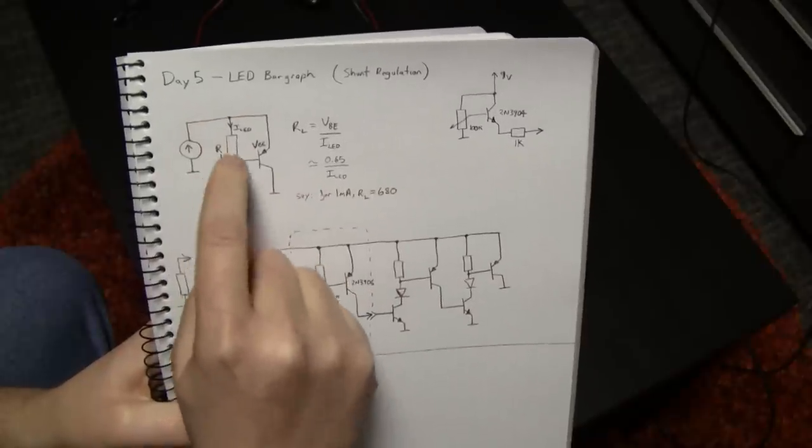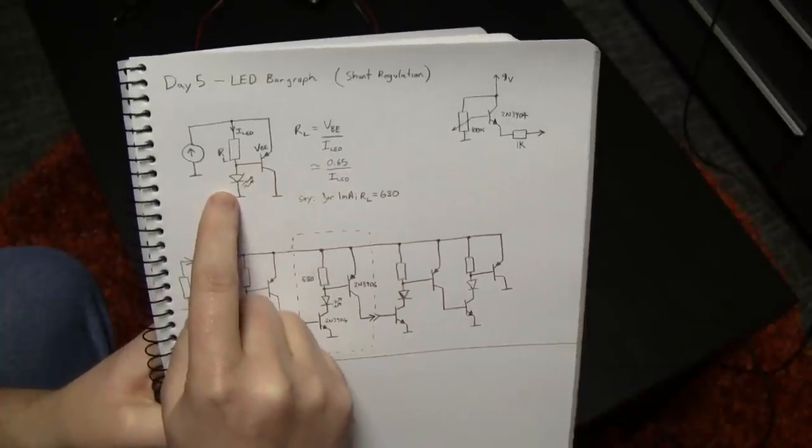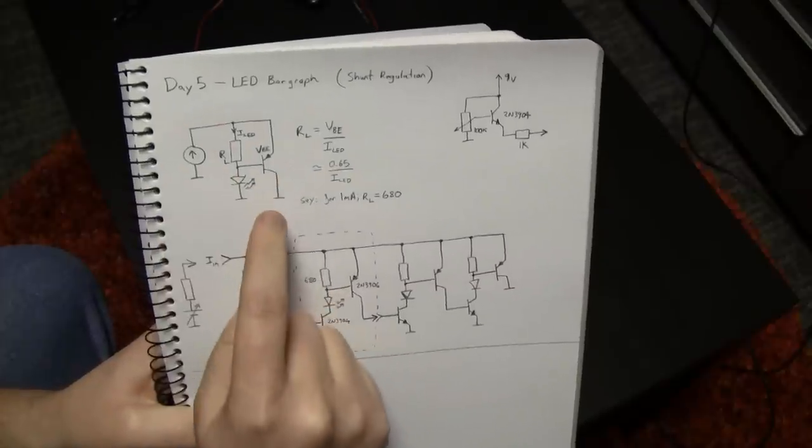So once you exceed this limit where the VBE starts to turn on, the current through this LED will actually plateau off and become essentially constant as you increase the current fed into the circuit.